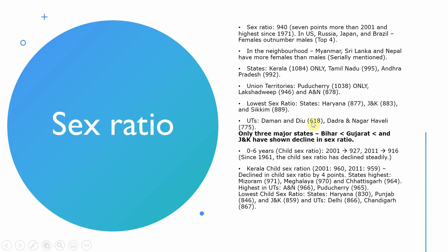Among Union Territories, Daman & Diu has 618 and Dadra & Nagar Haveli has 775 — the lowest. Just remember the top states like Kerala and the lowest ones like Haryana, Jammu & Kashmir, and Sikkim. Notably, only three major states — Bihar, Gujarat, and Jammu & Kashmir — have shown a decline in sex ratio. Moving to the 0–6 year child sex ratio, we consider children up to age 6 for this measure.